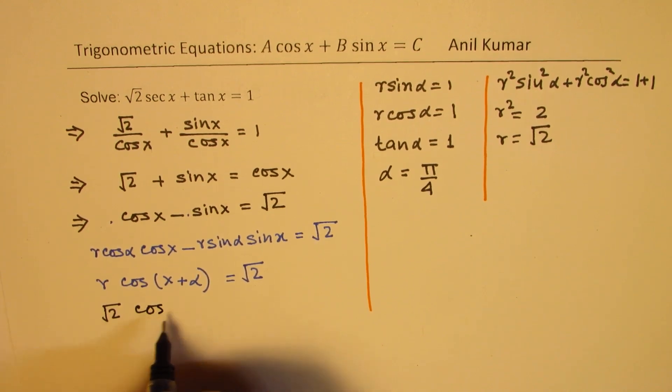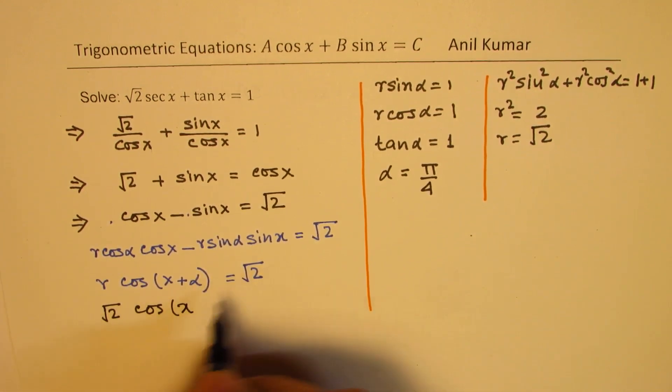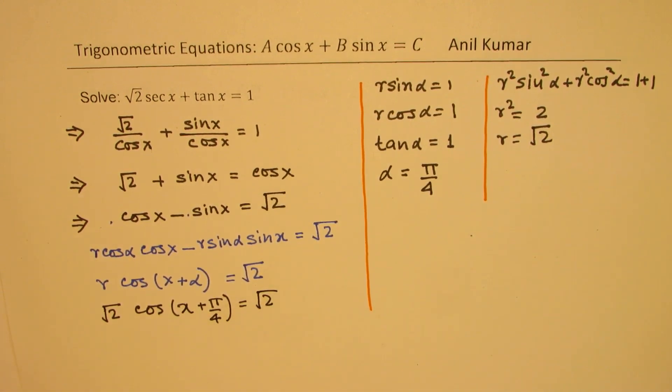So we have square root of 2 for r, cos of x and alpha is pi by 4 equals to square root of 2. Or we can now solve this further and say cos of x plus pi by 4 is equal to 1.